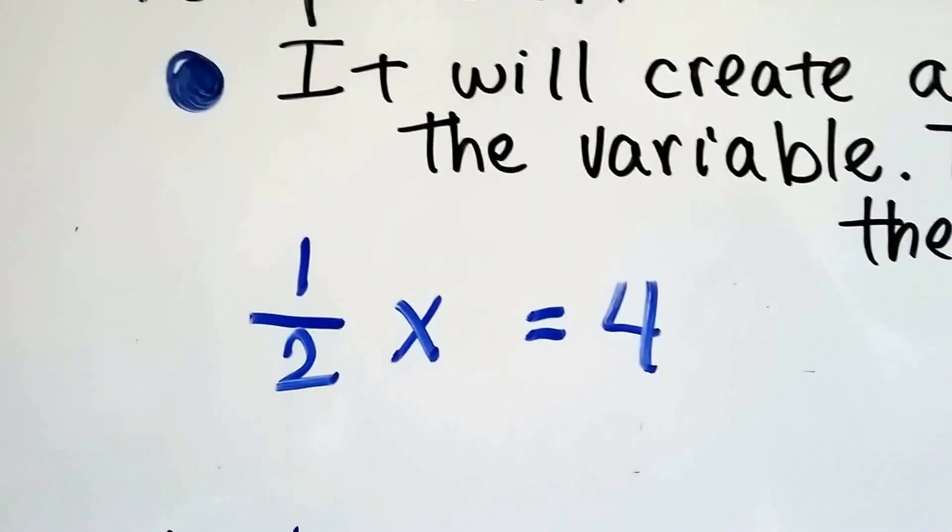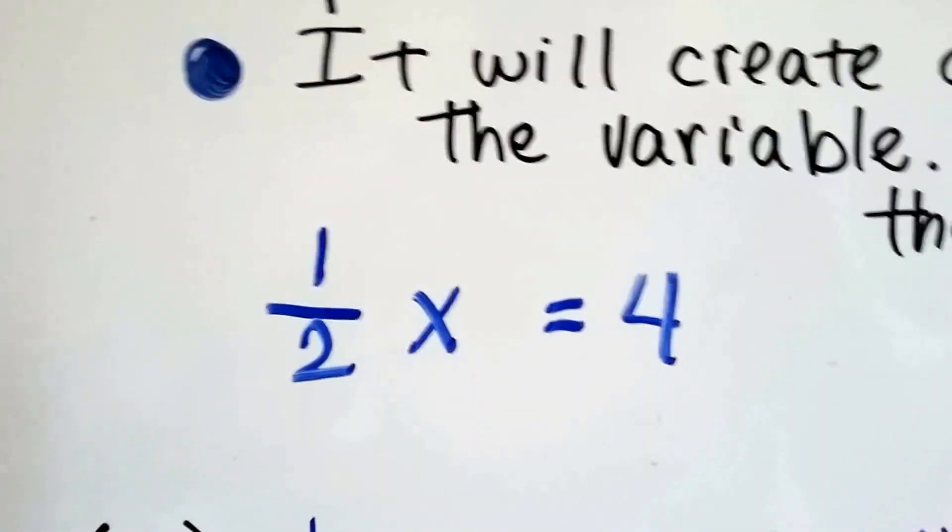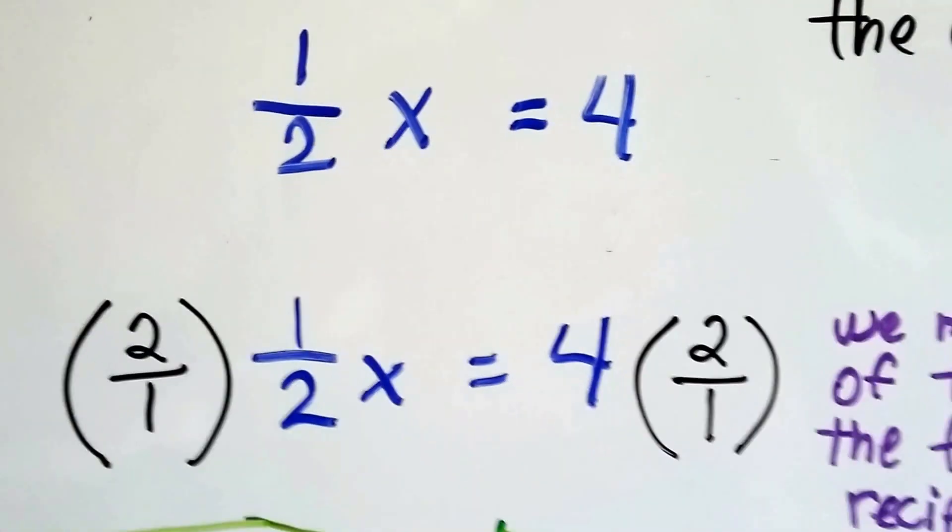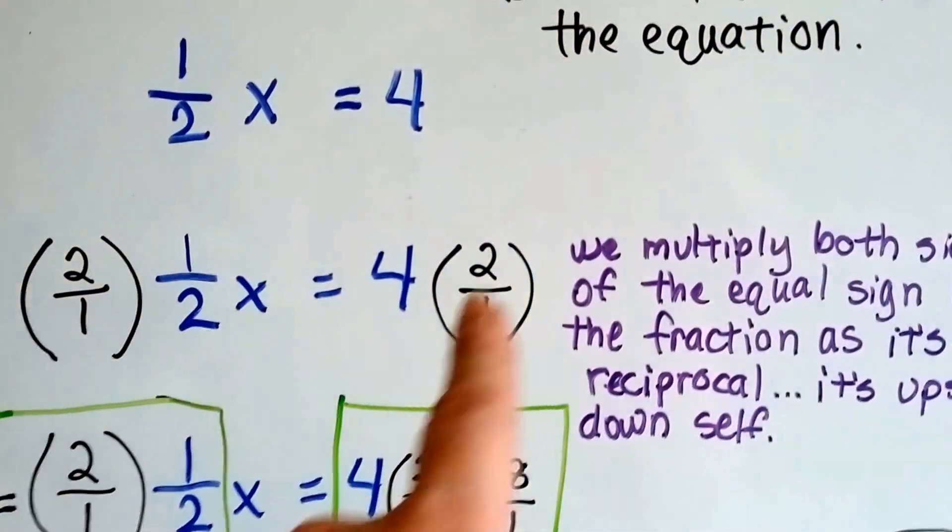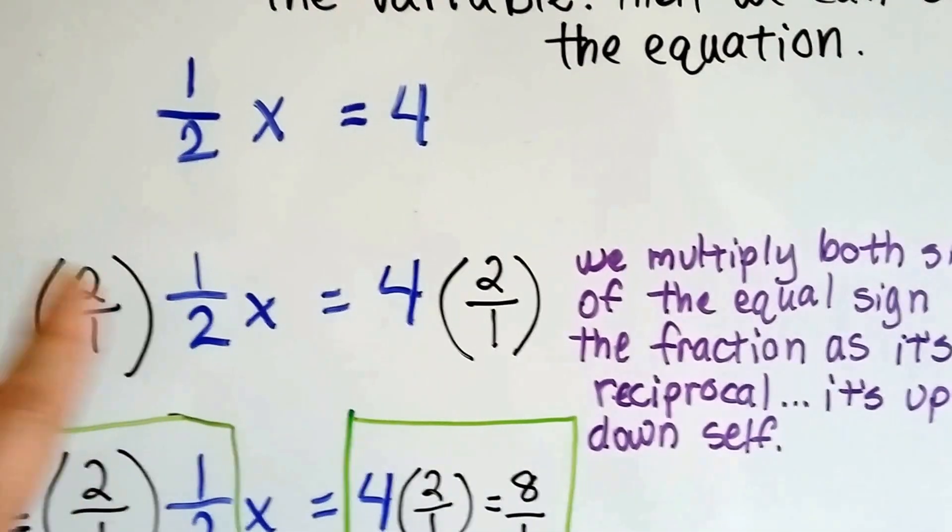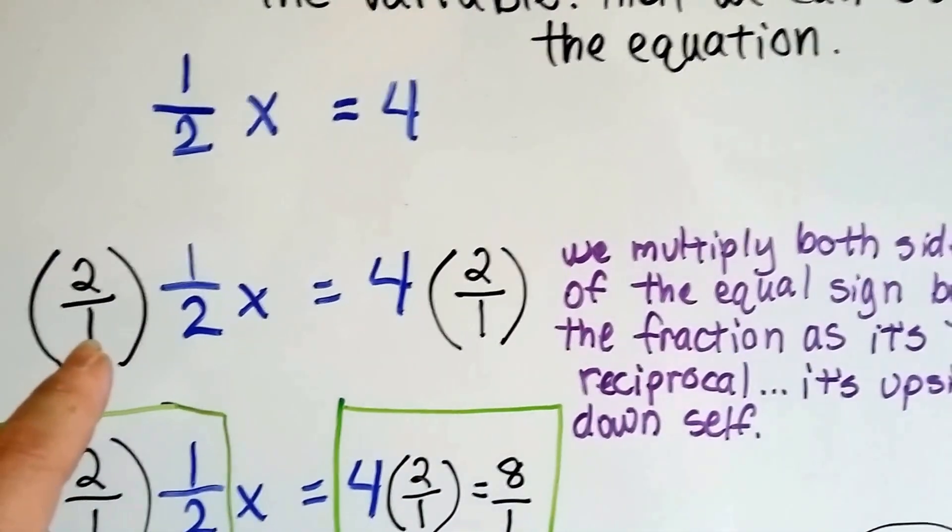If this is the problem we're given, half x equals 4, all we have to do is multiply each side of this equal sign by the reciprocal of half. Then that would flip it upside-down to the 2 over 1. See?